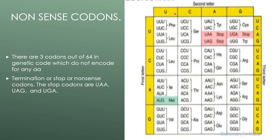Nonsense codons: there are three codons out of the 64 genetic code entries which do not encode any amino acid — these are termination, stop, or nonsense codons. The stop codons are UAA, UGA, and UAG.